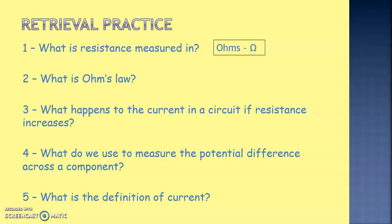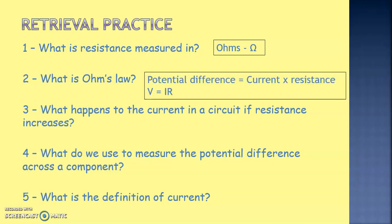Question two: what is Ohm's Law? Ohm's Law is potential difference equals current times resistance, and we can abbreviate that using symbols to V equals IR.